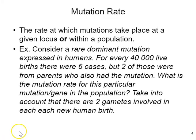Mutation rate is a term that means the rate at which mutations take place at a given locus or within a population — how frequently a mutation happens, either within a sequence or within a population. Generally there will be some agreed-upon way of normalizing the rate, such as per 100,000 people in a population or per genome size.